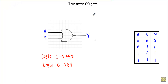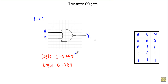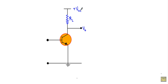In this video I will show you the operation of a transistor OR gate. With two inputs, if at least one input goes to logic 1, the output will be at logic 1. The truth table shows: 0,0 → output 0; 0,1 → output 1; 1,0 → output 1; 1,1 → output 1. For this transistor OR gate, logic 1 is denoted by 5 volts and logic 0 by 0 volts.